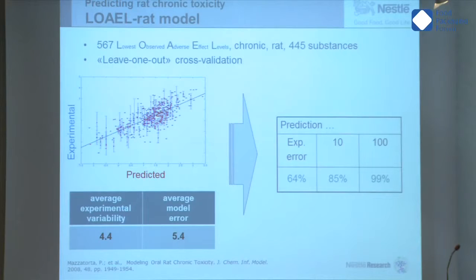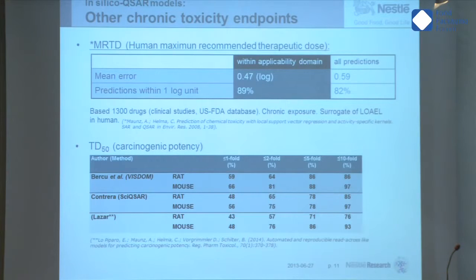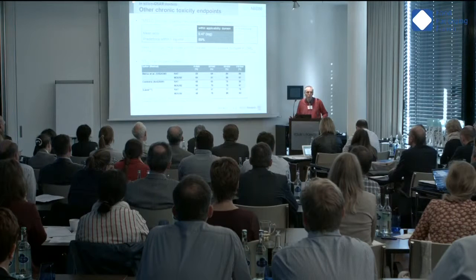You cannot have a model which would be better than the experimental data. The average experimental variability is about a factor of four, and the average model error is about five — meaning there isn't a very big difference between the two. We have done that with other endpoints as well. A recent one we published is the TD50, carcinogenic potency, which is a very important parameter to predict. You get a prediction very close to experimental data, with experimental variability of at least a factor of four.